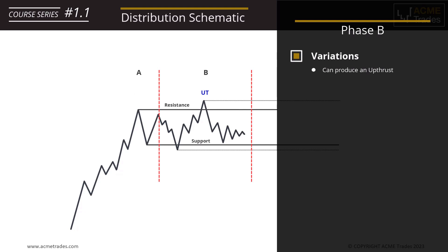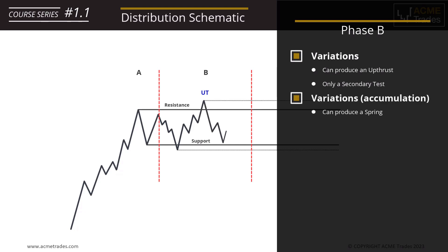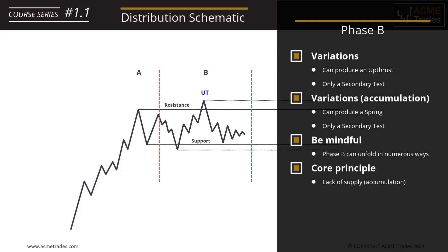Distribution within Phase B can produce an up thrust, not just a secondary test. An up thrust needs to break through a resistance area, while a secondary test may simply halt near resistance then decline. Within Phase B the market may also print springs. It's important to understand that there will be different flavors of accumulation and distribution — it can unfold numerous ways within Phase B: sometimes with springs, sometimes without, some with six secondary tests, some with two. Essentially we are looking for a lack of supply in Phase B via accumulation and a lack of demand in Phase B via distribution.